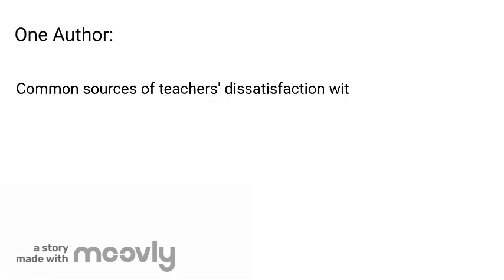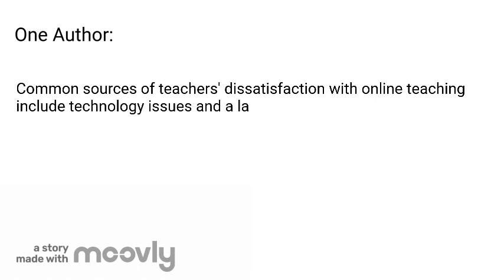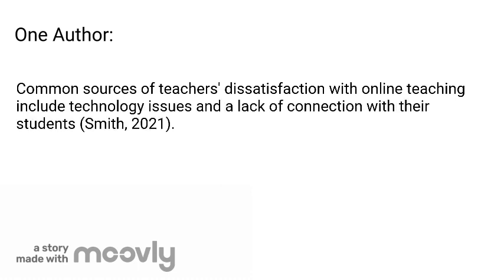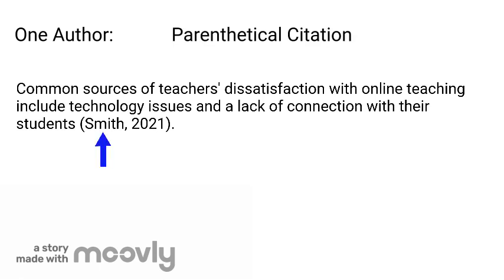Let's start with sources that are written by one author. For example: 'Common sources of teachers' dissatisfaction with online teaching include technology issues and a lack of connection with their students (Smith, 2021).' This is called parenthetical citation. The author's last name and the year are placed in parentheses with a comma separating the name and the year. The period of the sentence is placed after the entire citation.